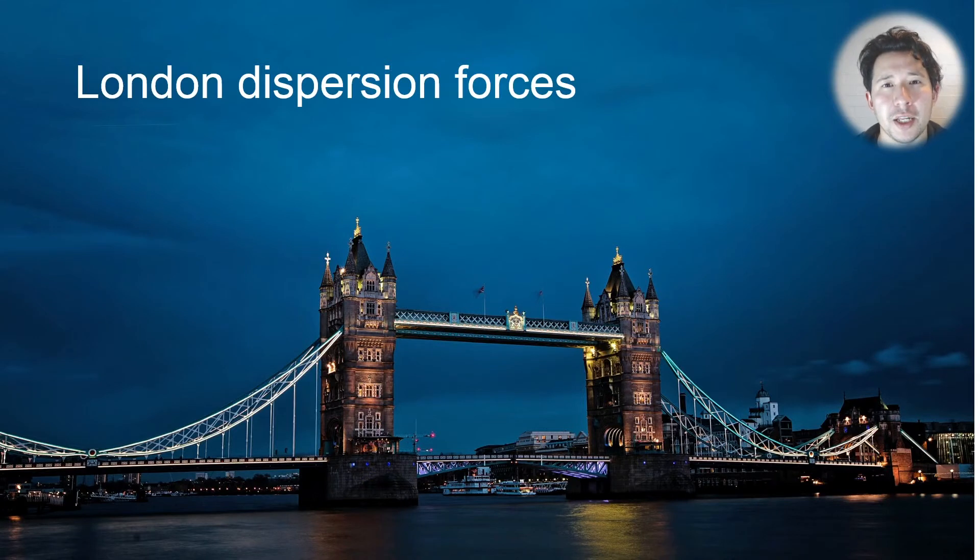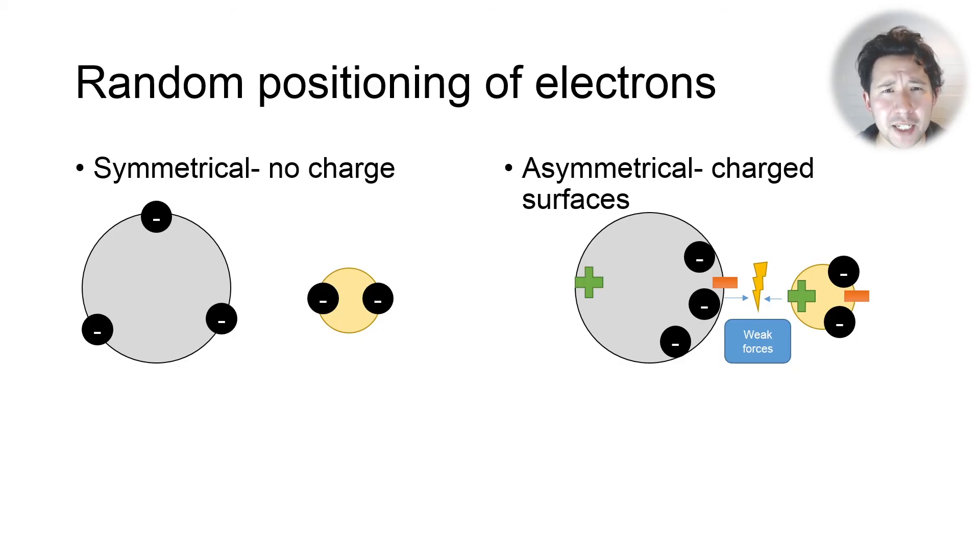It uses something called London dispersion forces, and what these are is a kind of van der Waals force. Basically what happens is when the electrons are randomly moving around molecules, sometimes they'll all end up on one side. That side then becomes negative.